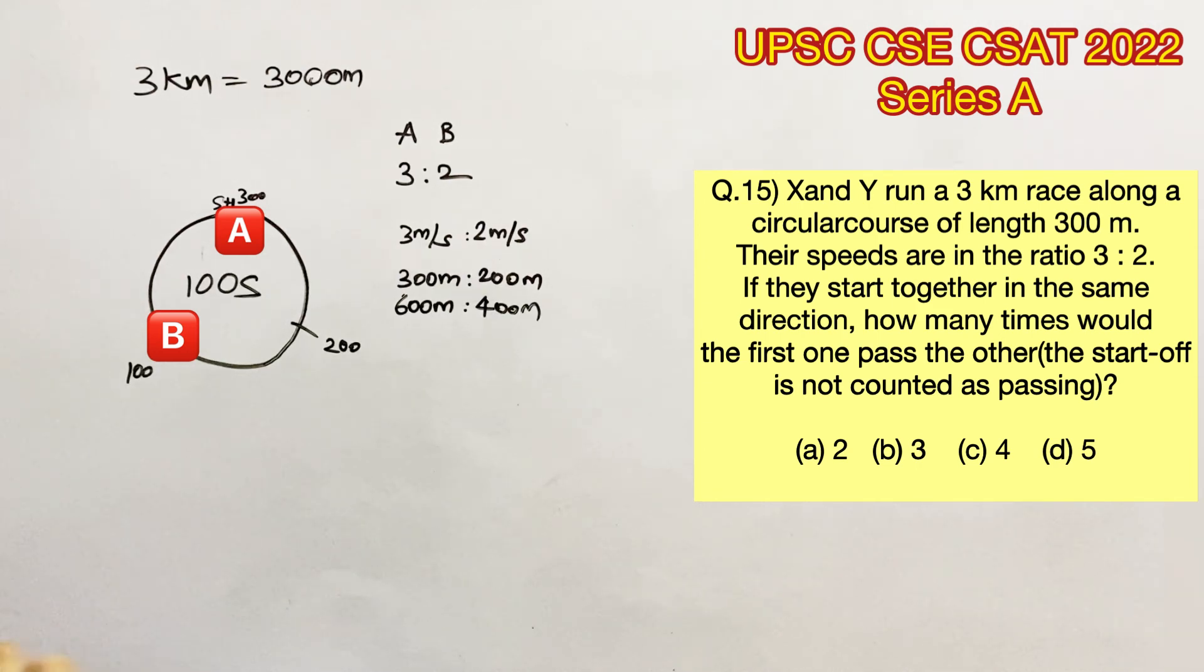And the third time, for the third 100 seconds, that is the 300 seconds, A would have completed 900 meters, which is 3 rounds. And A would have reached the start point.